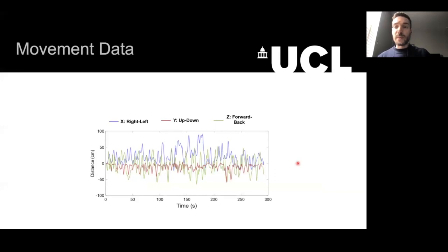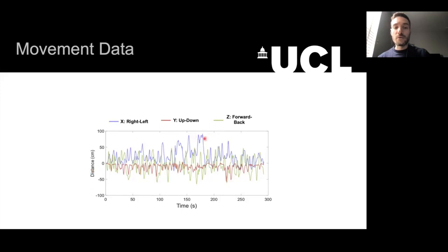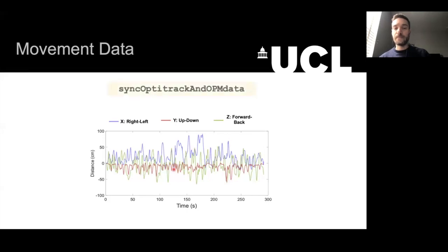Here we're plotting the movement data analysed from the OptiTrack recorder. The y-axis is the distance from the start position and the x-axis is time. The range of movements is extremely large — up to 100 centimetres — which is a hundred times larger than a movement you could make in a conventional cryogenic MEG system. The movement is also continuous throughout, not just a one-time head shift. We can sync this information with the OPM data using the function sync OptiTrack and OPM data.